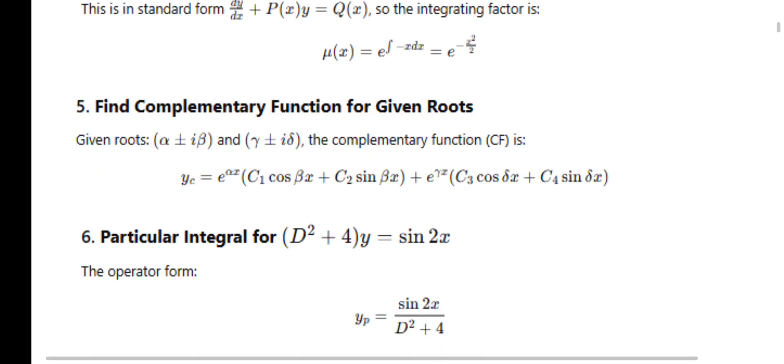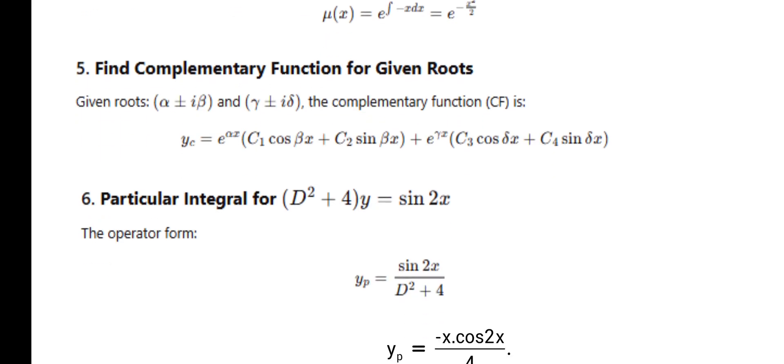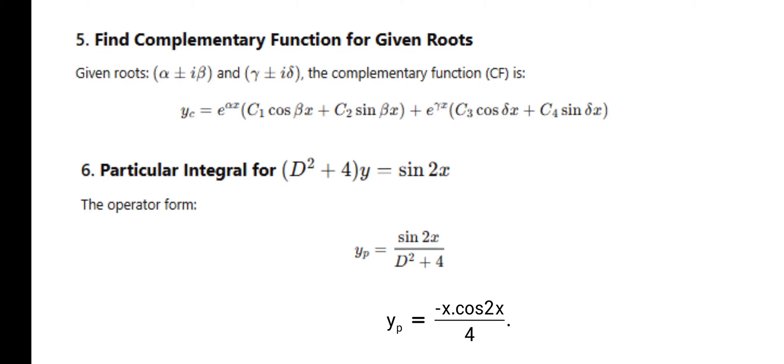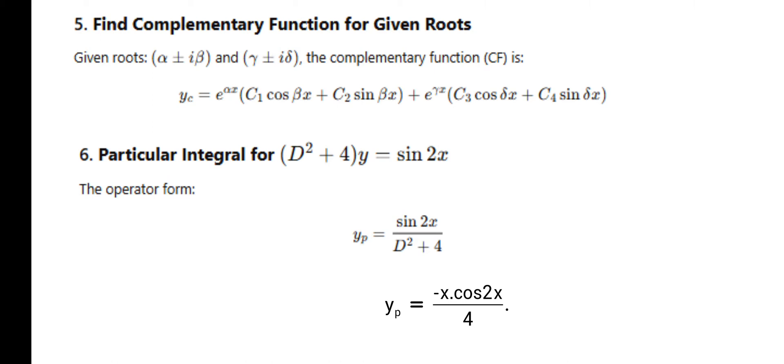Next: complementary function when complex roots are repeated. If roots are α ± iβ and γ ± iδ, the complementary function is: yc = e^(αx)(c₁cos βx + c₂sin βx) + e^(γx)(c₃cos δx + c₄sin δx).